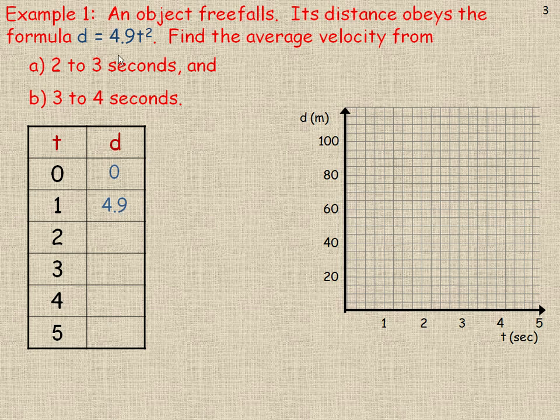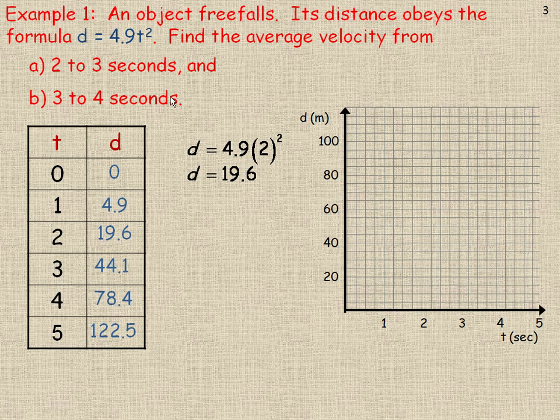If I put 1 in place of time, I get 4.9 because 4.9 times 1 squared is 4.9. If I want to find 2, I would do 4.9 times 2 squared. 2 squared is 4, multiply that 4 by 4.9, and you'll get 19.6. Filling in the other values in the chart, we get 44.1 for 3 seconds, 78.4 after 4, and 122.5 after 5. Notice it's going further every additional second because it's accelerating.